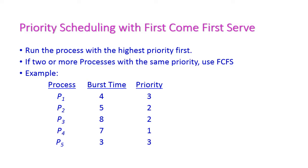First, let us see the problem: priority scheduling with first come first serve scheduling. Here, first run the process which is having the highest priority. Second, if two or more processes have the same priority, then we have to use first come first serve basis for selecting that process.